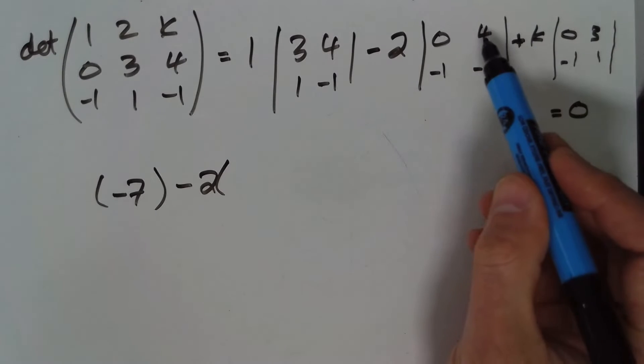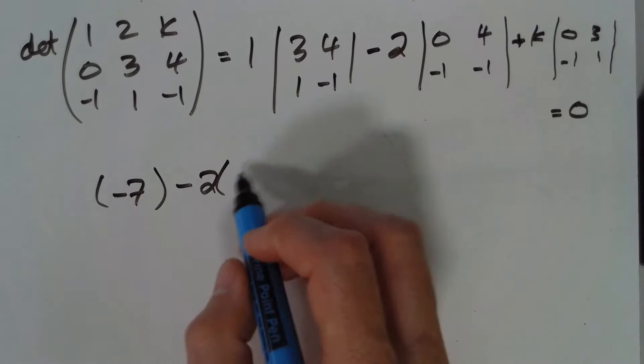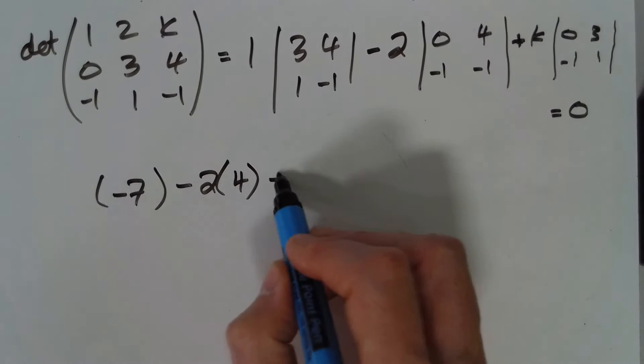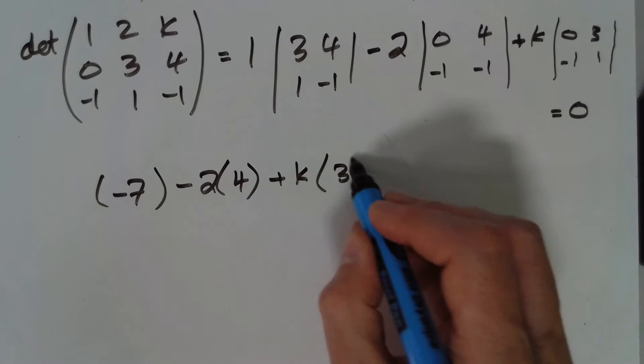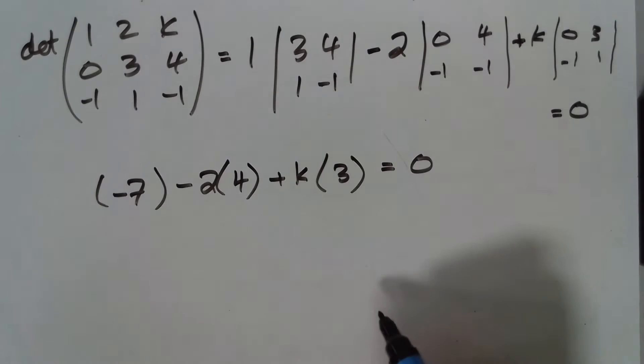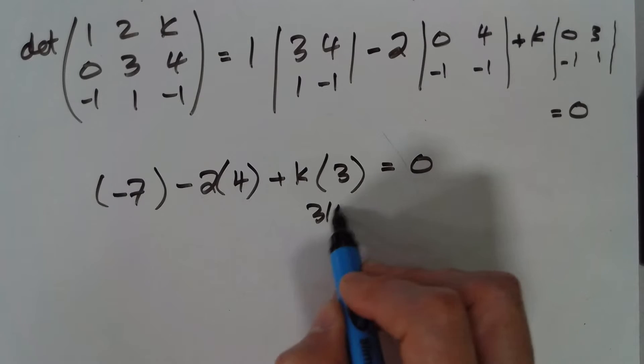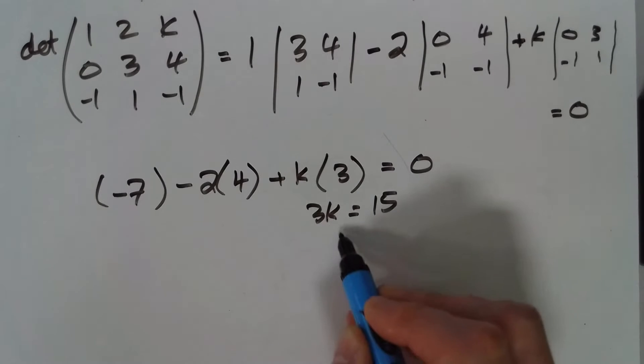Minus 2 lots of, well that's 0, minus minus 4, which is 4. And then we've got k lots of, well that's 0, and then minus minus 3, so that's 3. And we want that to equal 0. So we've got here 3k equals 15, and so k is equal to 5.